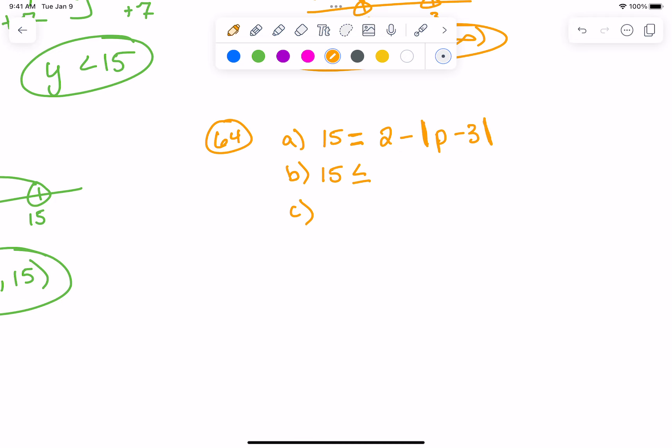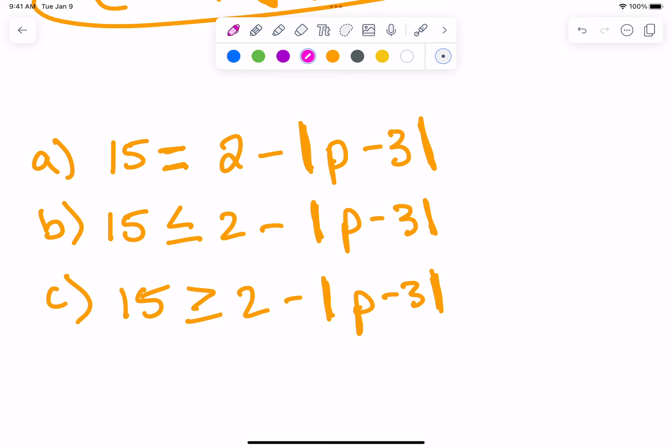Let's do the first one. What shall we do first? Minus the 2, that's 13 equals negative absolute value of P minus 3. Then what? Divide by a negative, so that will be negative 13 equals P minus 3. Will the absolute value of something ever be equal to negative? No solutions.